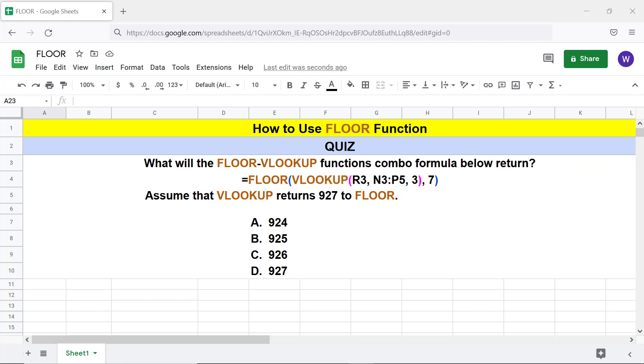The answer is A: 924 is the nearest lower multiple of 7.